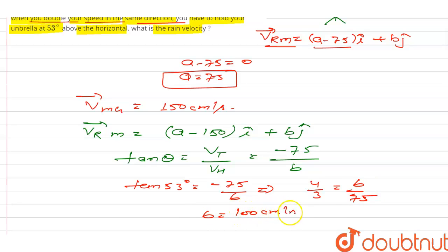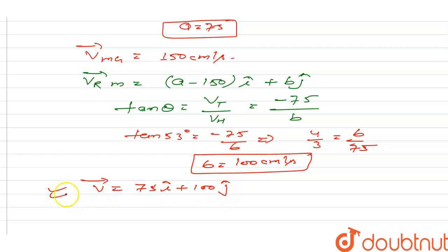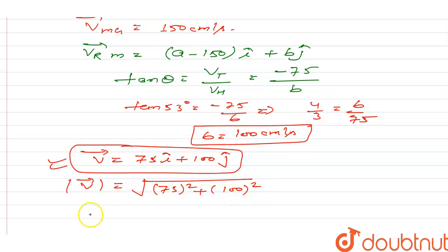We have found that b = 100 centimeters per second. So the velocity of rain with respect to ground can be written as 75·i-cap + 100·j-cap. This is the final velocity required in this question. The magnitude of this velocity is the square root of 75² plus 100², which equals 125 centimeters per second.